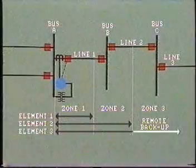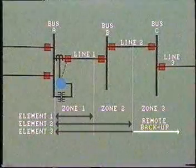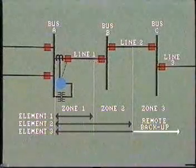Similarly, zone three protection is provided as remote backup for faults along the remainder of transmission line two and on into line three.